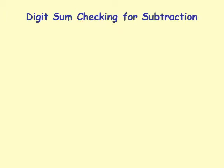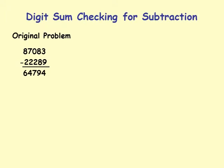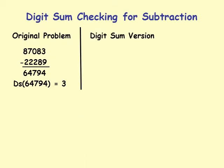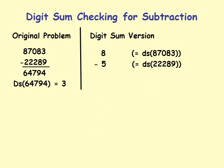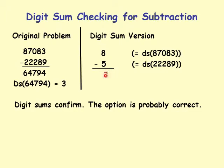Digit sum checking for a subtraction problem: 87083 minus 22289. One option is 64794. Digit sum of 64794 is 3. Digit sum version: digit sum of 87083 is 8, digit sum of 22289 is 5. 8 minus 5 equals 3. This 3 matches the option's digit sum of 3, so digit sum confirms — this option is probably correct.